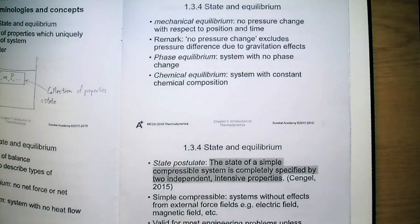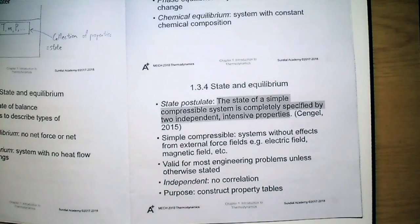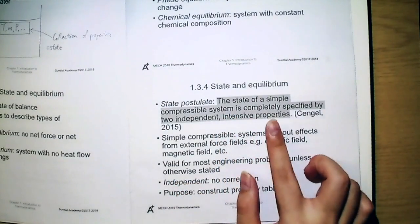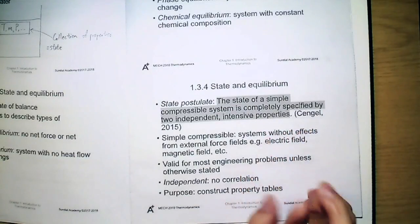Although the state of a system is fixed if all properties are given, by daily experience we know that we do not need to specify all of the properties in order to fix the state, as some properties depend on others. But how many do we need? It's given by the state postulate. The state of a simple compressible system is completely specified by two independent intensive properties.